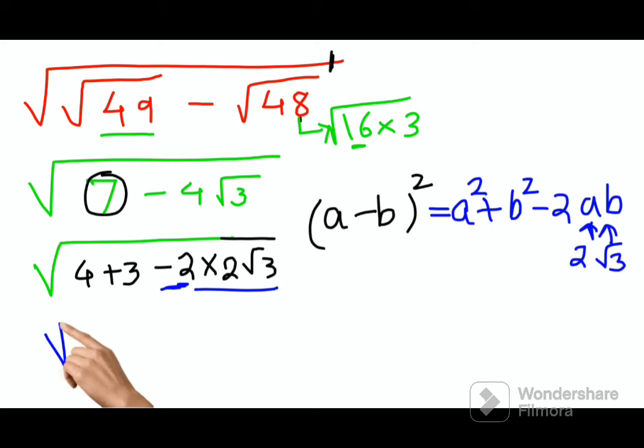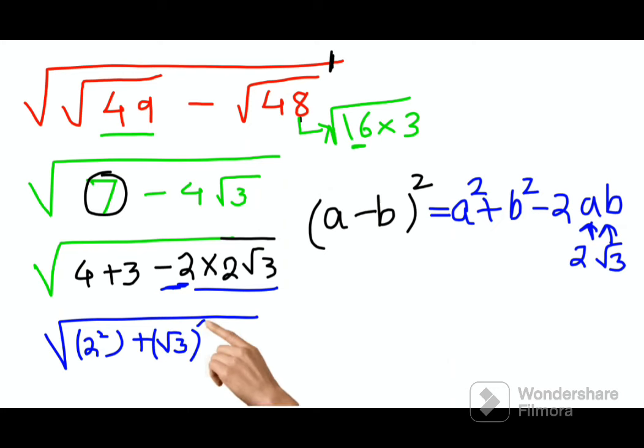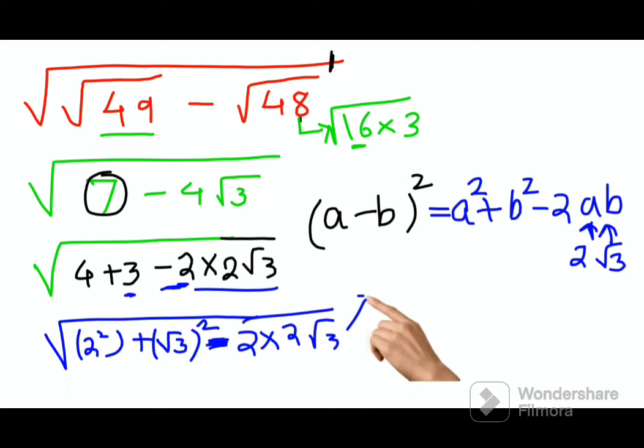So now let's solve this further. This becomes 2 square and root 3 the whole square, which then becomes just 3, and then you have minus, this becomes minus 2 into 2 root 3. So this is basically nothing but square root 2 minus root 3 the whole square.